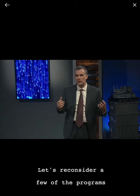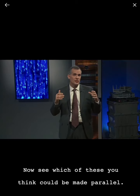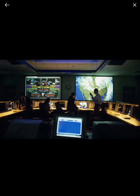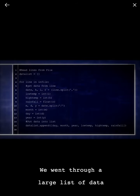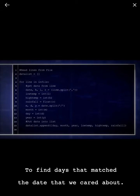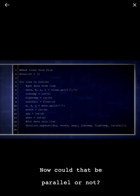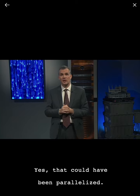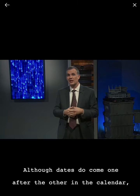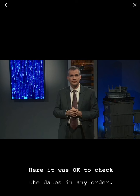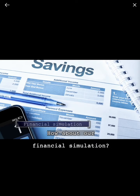Let's reconsider a few of the programs that we've developed in this course and see which of these you think could be made parallel. Remember the program where we looked at weather data to predict temperature and rain for a specific date? We went through a large list of data to find days that matched the date that we cared about. Could that be parallel or not? Yes, that could have been parallelized. Although dates do come one after the other in the calendar, here it was okay to check the dates in any order.